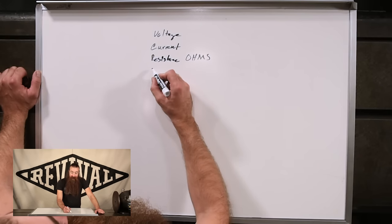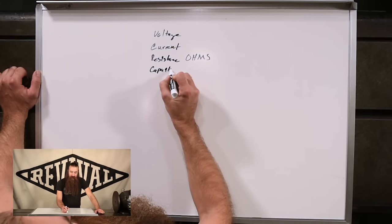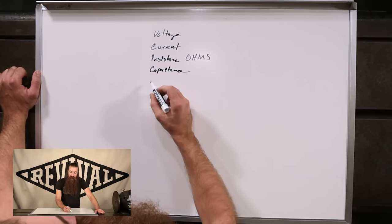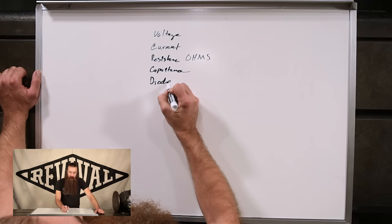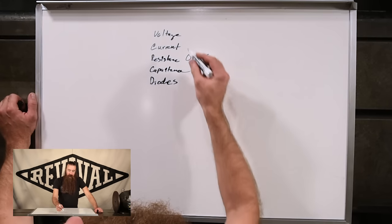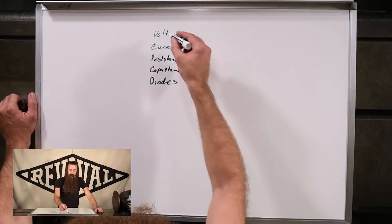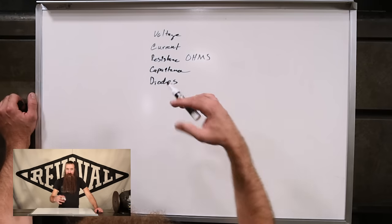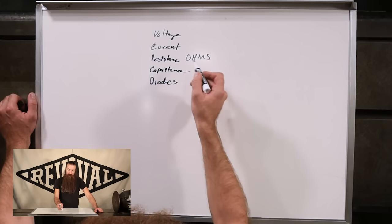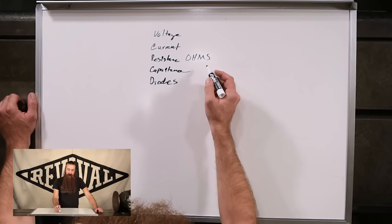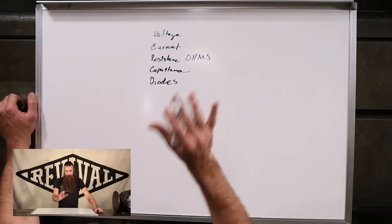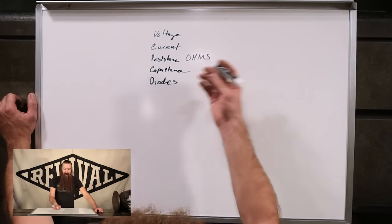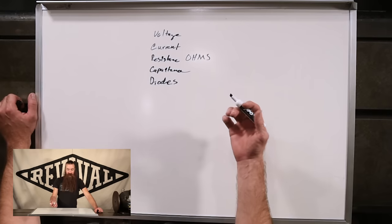We also have a few things like capacitors, or capacitance, and there's also diodes. Voltage and current are more of a conceptual thing. Resistance and ohms — that's more of a discrete component. Capacitors are also a discrete component, and diodes are a discrete component.